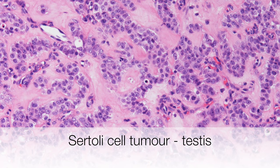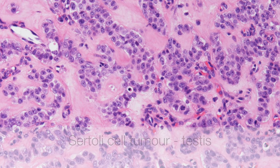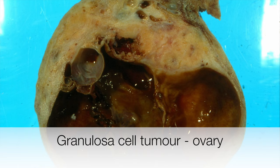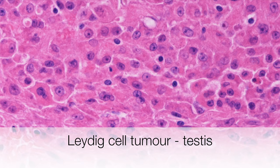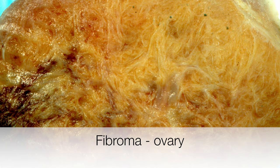Here are a few sex cord stromal tumours. This one is a Sertoli cell tumour of the testis. This is the gross appearance of a granulosa cell tumour of the ovary. Here is a Leydig cell tumour of the testis, and this is the gross appearance of an ovarian fibroma, which is the most frequent sex cord stromal tumour to occur in the ovary.